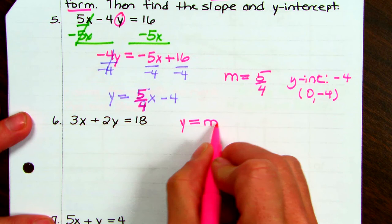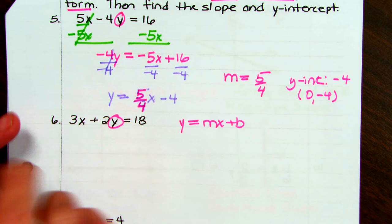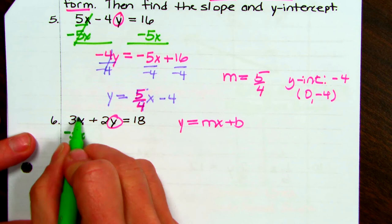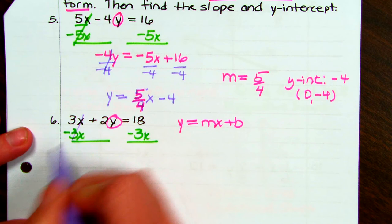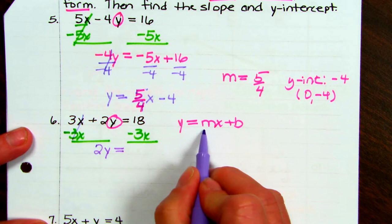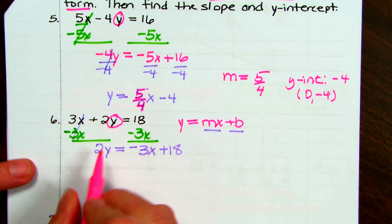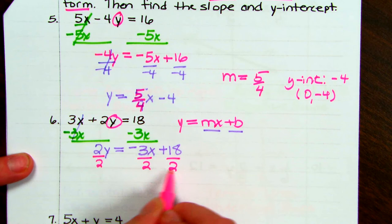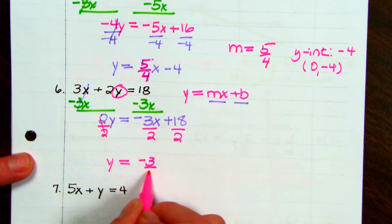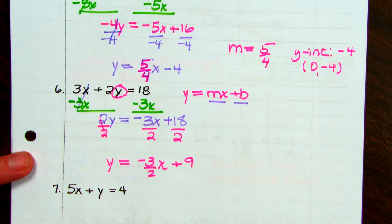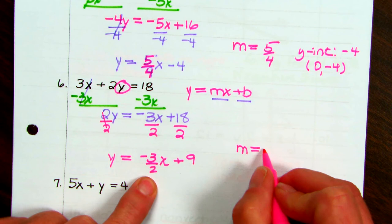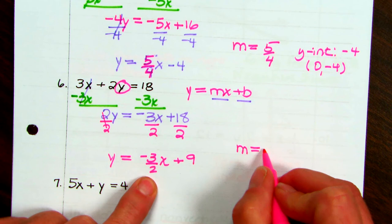For number 6, to get y = mx + b, get y by itself. Move the 3x being added to 2y by subtracting 3x from both sides — that goes away. Bring down 2y equals negative 3x + 18. Divide everything by 2: y equals negative 3/2 times x, and 18 divided by 2 is 9. So the slope is negative 3/2, and the y-intercept is 9, or as a point, (0, 9).